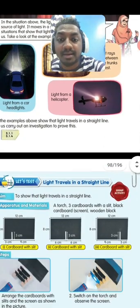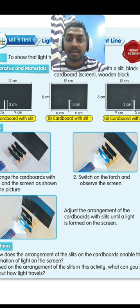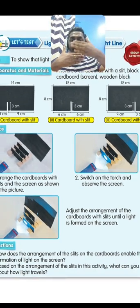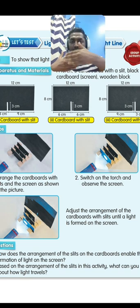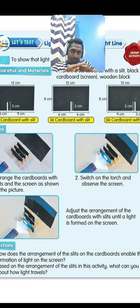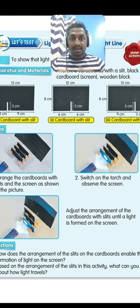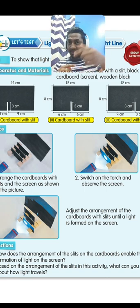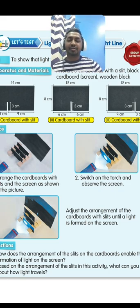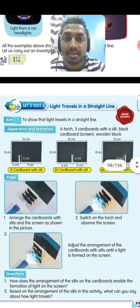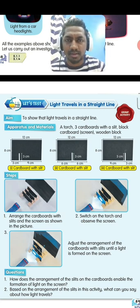To prove that light travels in a straight line, there is an experiment you will do in school. There will be three cardboards, each with one hole in the middle. When the holes are aligned in a straight line and you shine a torchlight, the light can be seen on the screen. But if one cardboard is moved so the holes are no longer aligned, you cannot see the light on the screen — because light only travels in a straight line and will not zigzag.